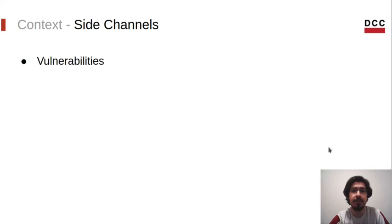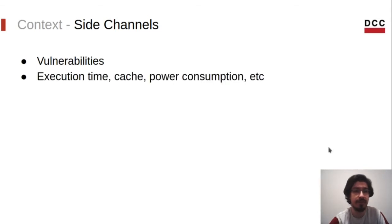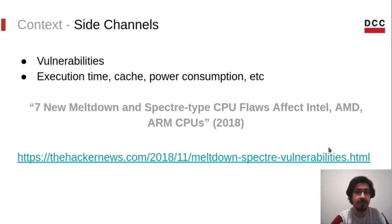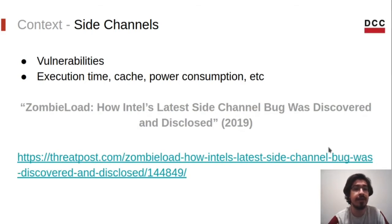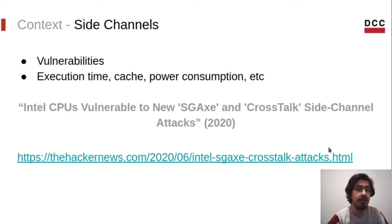Side channels are basically vulnerabilities that can be explored by an adversary to obtain sensitive information from a program. There are a lot of types of side channels - those based on the running time of the program, on the layout of the cache, or even on power consumption. Year after year, we hear news about side channels being discovered. For instance, in 2018, many flaws were discovered that affected multiple CPUs like Intel and AMD - flows called Meltdown and Spectre. In 2019, this new side channel called Zombie Load, also affecting Intel CPUs, was discovered and fixed. And last year, again, new side channel attacks were described for Intel CPUs.